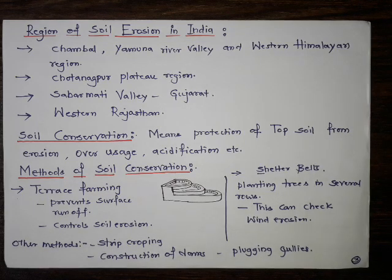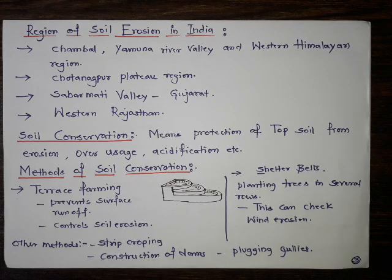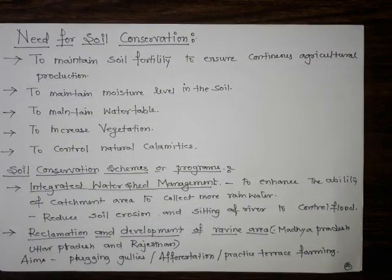Construction of dams has multiple utility — they can hold water and at the same time help in conservation of soil, generation of hydroelectricity, and so on. There are other benefits of constructing dams across rivers. Shelter belts, where trees are planted along with crops, are known as agroforestry. These are all methods that can be adopted for conservation of soil.